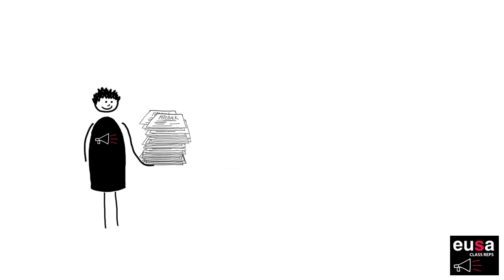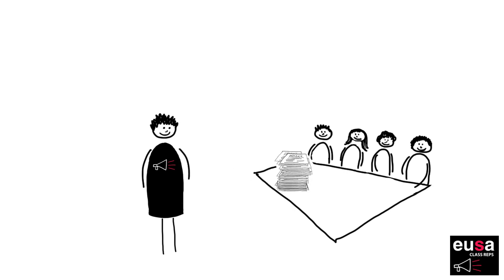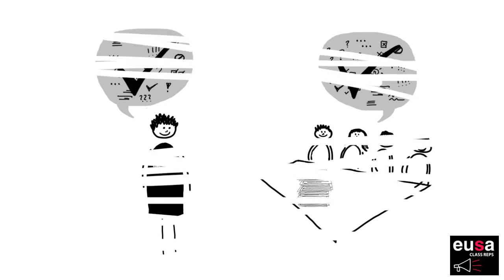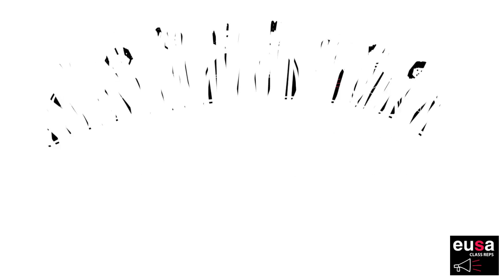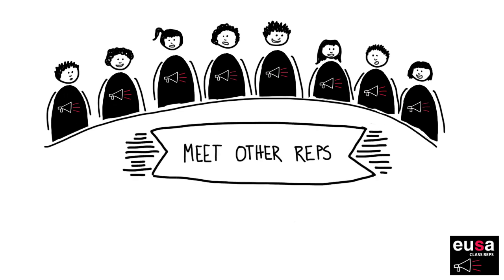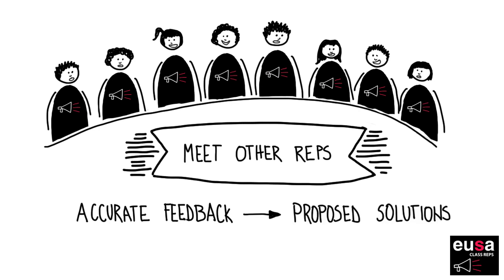You should be objective and accurate by providing all the feedback you've gathered, since a Class Rep needs to be representative of all students in their cohort, especially if you personally don't agree with every point. You can meet online or in person with the other Class Reps in your subject area to prepare for SSLC meetings. By working together, presenting accurate and objective information about students' feedback, and proposing solutions, you can implement positive changes with staff members.